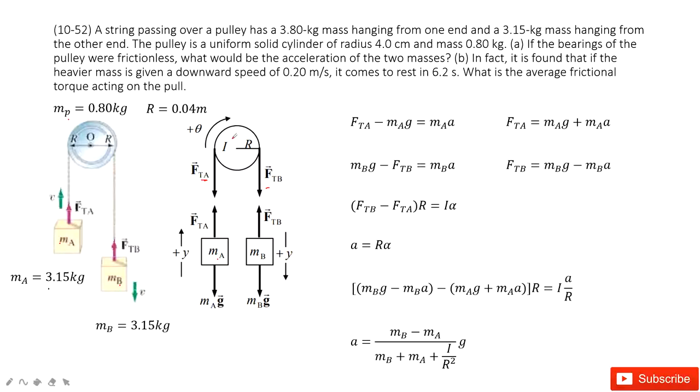So the torque for this pulley is FtB minus FtA, is the net force, times R. This is R and angle. Times R, and equals the torque, I times alpha. I is the moment of inertia for this pulley, times the angular acceleration.